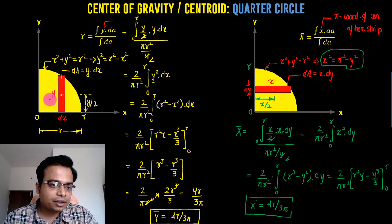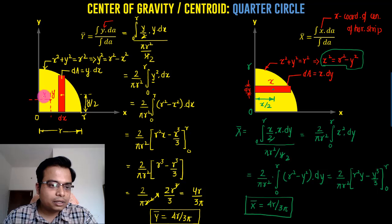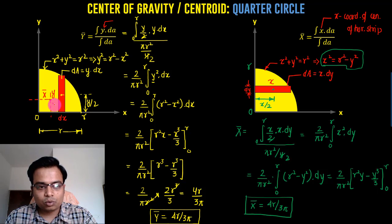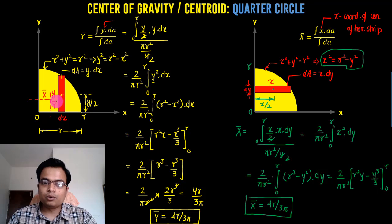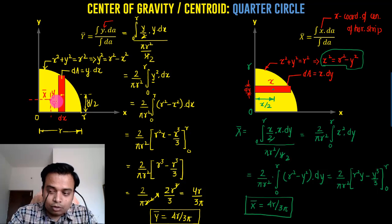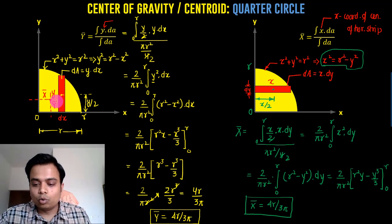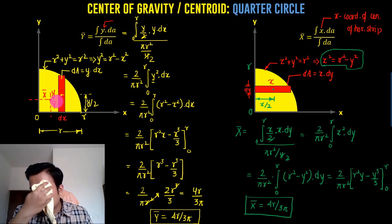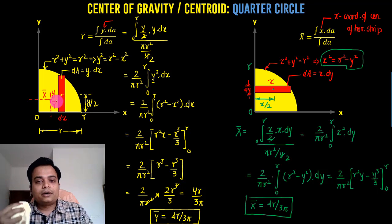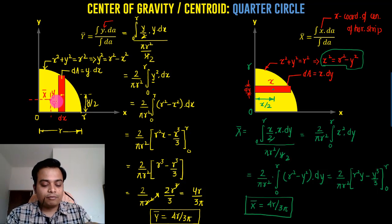So the centroid is located here on the diagram. x̅ = 4r / 3π and y̅ = 4r / 3π. Both coordinates of the centroid of the quarter circle are equal to 4r / 3π.